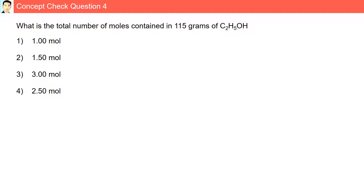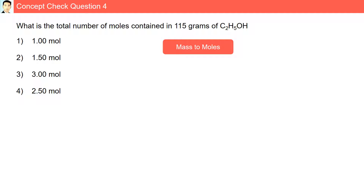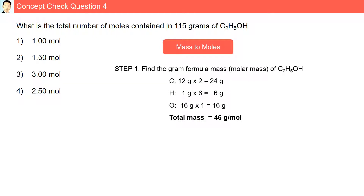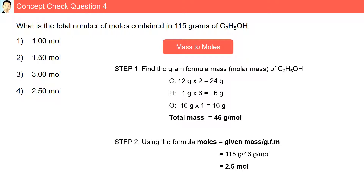Question 4: what is the total number of moles contained in 115 grams of C2H5OH? We are going from mass to moles. The gram formula mass of C2H5OH is 46 grams per mole. Using the formula, moles equals given mass divided by gram formula mass: 115 grams divided by 46 grams per mole gives 2.5 moles — answer choice 4.